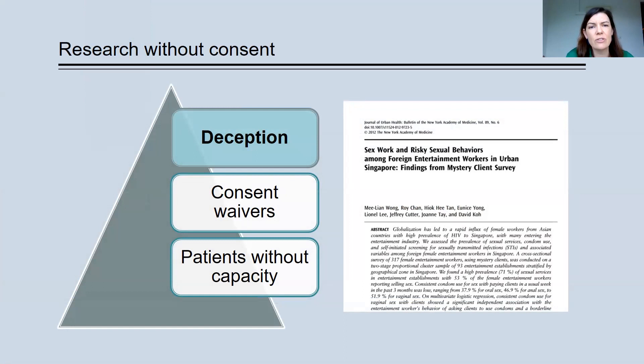So research with deception might be allowed under the following circumstances. If the research has really high social value, it answers an important question for the community. If it would be impossible to do the research without deceiving participants. If the research is relatively minimal risk. And typically, there's a requirement that following the research,